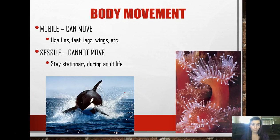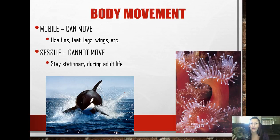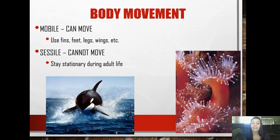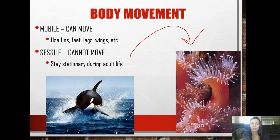In terms of body movement, animals can do two things - they can either move or not move. Mobile or motile animals can use fins, feet, legs, wings, etc. Sessile animals, like sea anemones for example, stay stationary during their adult life. They do usually move though when they are young.